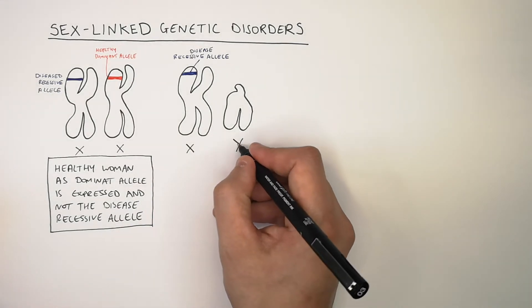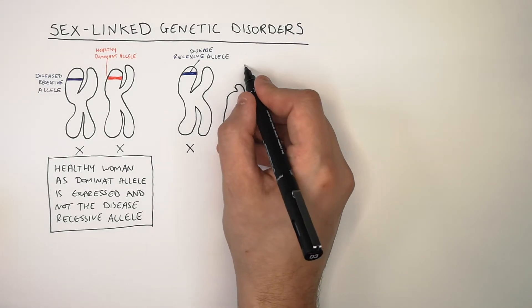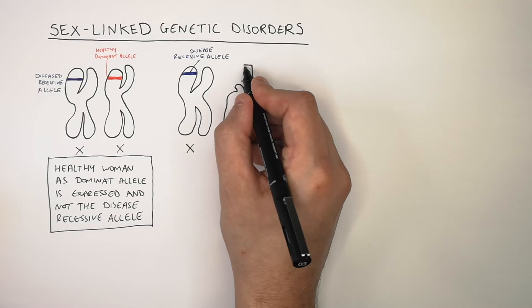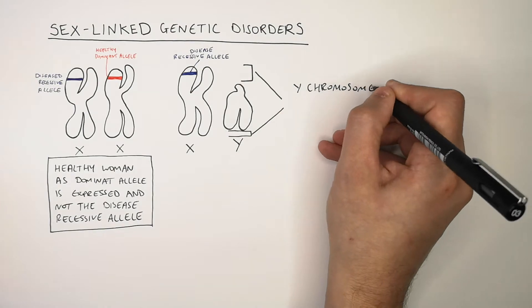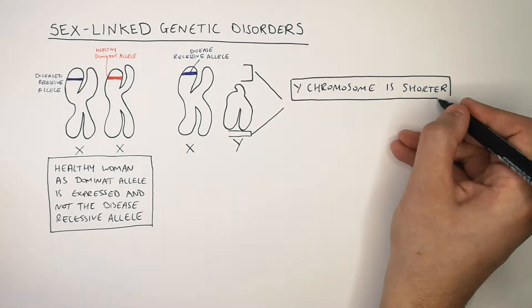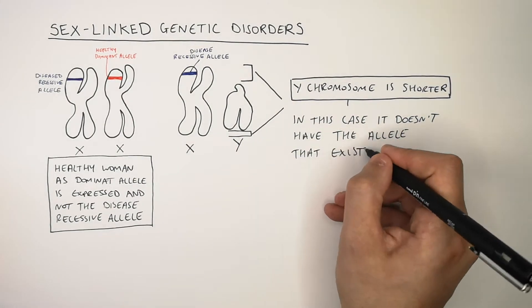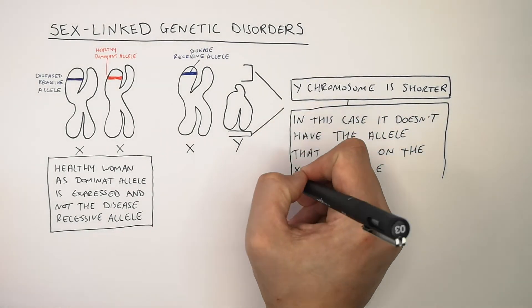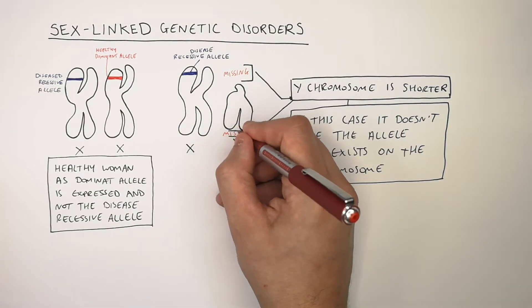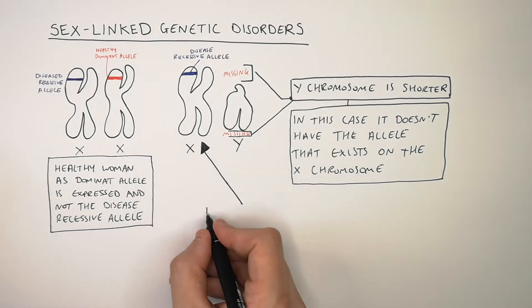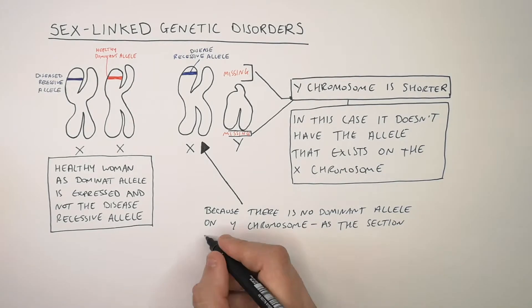The Y chromosome is shorter than the X chromosome, so there are parts of the chromosome missing — the top and bottom sections. Because the Y chromosome is shorter, it cannot carry the allele that exists on the X chromosome. This man will have the disease because there is no dominant allele on the Y chromosome, as that section is missing.